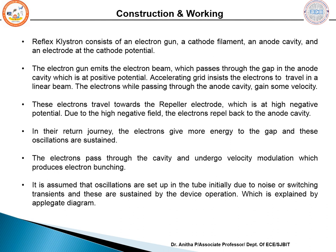The electron gun emits electrons which pass through the anode cavity maintained at high positive potential. Accelerating grids between them ensure the electrons travel in a linear path, gaining velocity as they pass through. Based on the sinusoidal voltage in the anode cavity, the electron velocity varies accordingly. The reflex klystron thus works on the principle of velocity modulation.